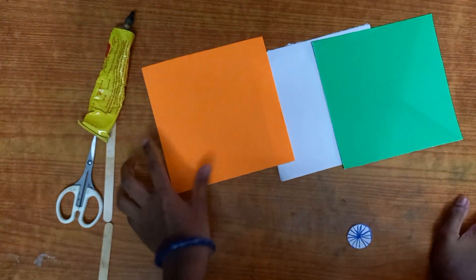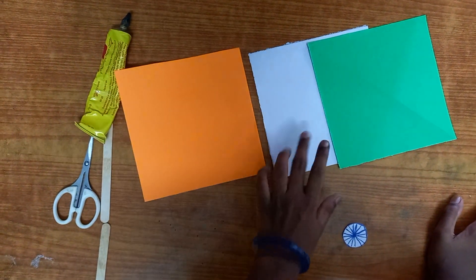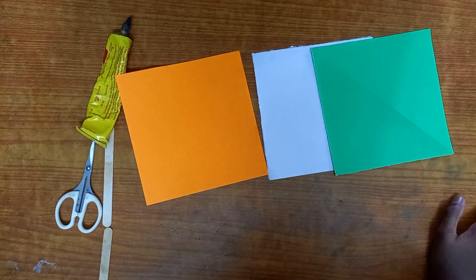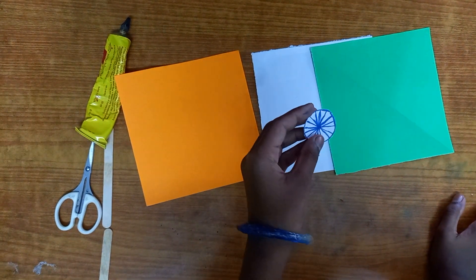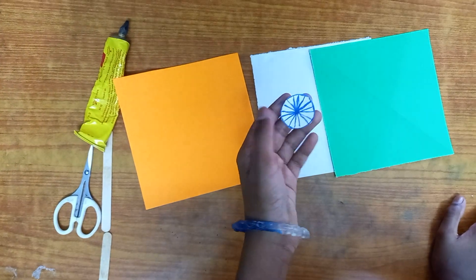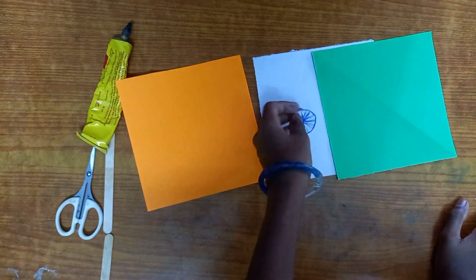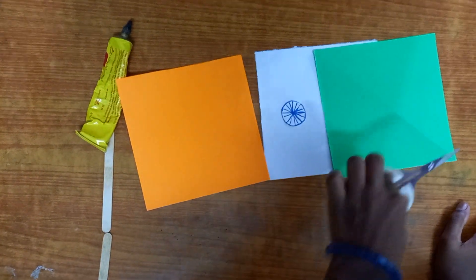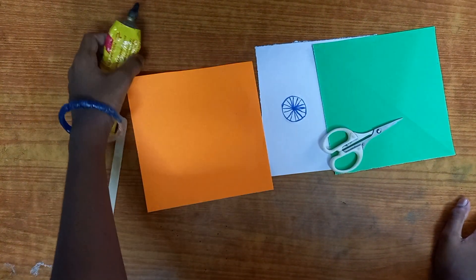15 by 15 centimeter paper: one orange, one white, and one green. We'll also be using a piece of paper which is cut in a circle, and this is going to be the chakra. Scissors, of course,